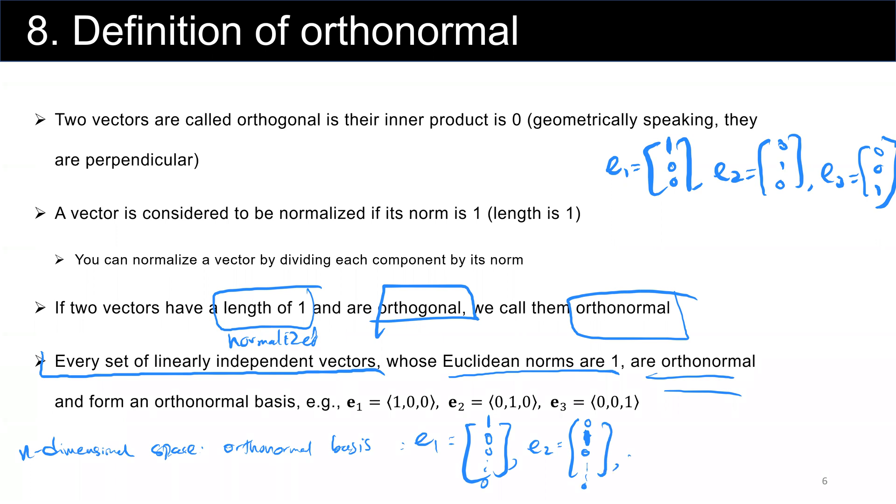E sub k: 0, 0, then 1 here in the kth position, then 0, 0. And finally E sub n: all 0 except the last component. This is an orthonormal basis for the n-dimensional space.